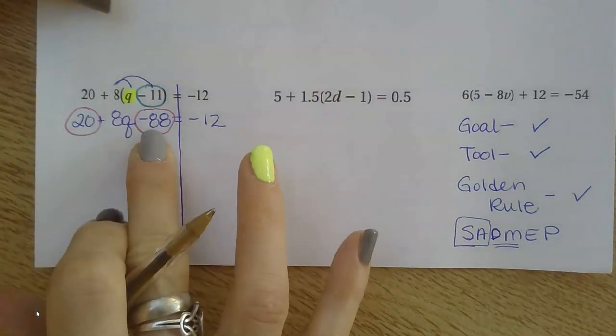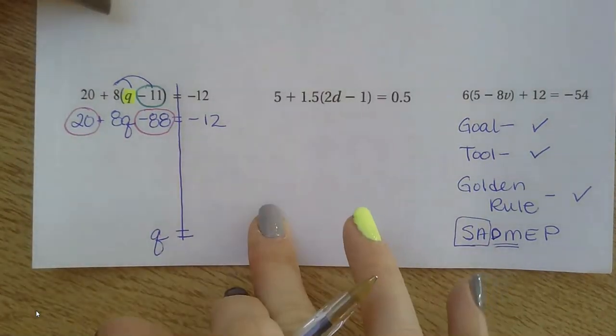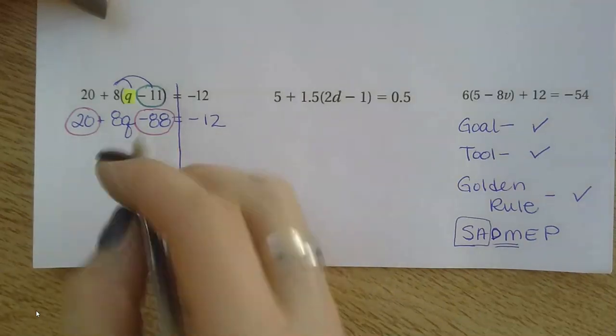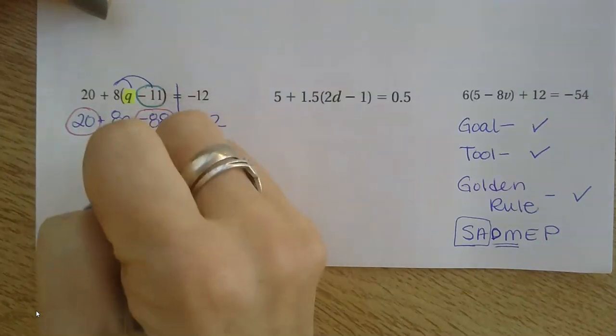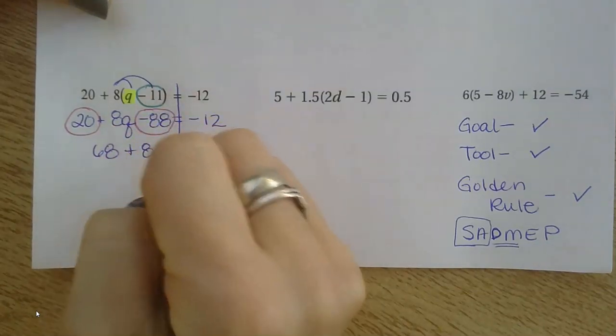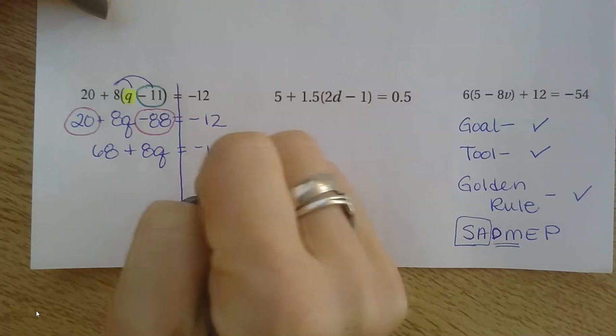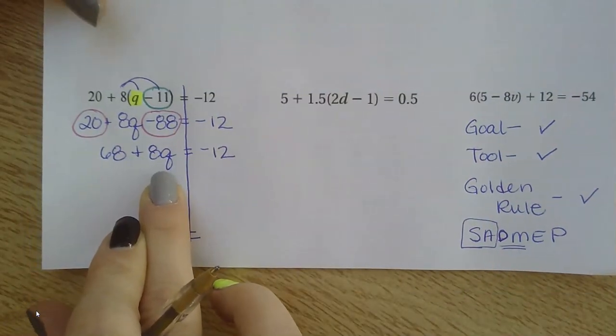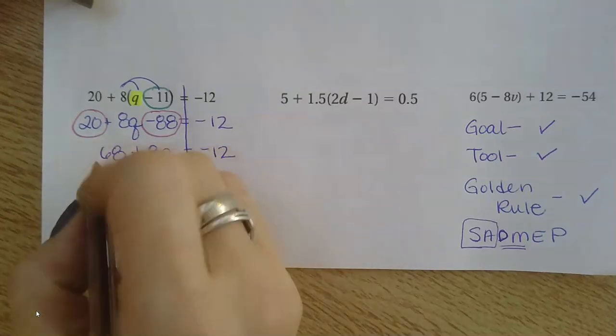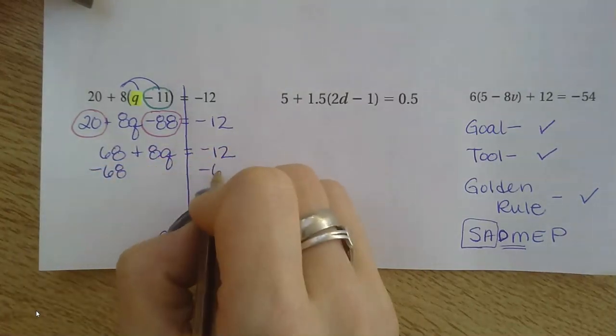Remember, different signs, I'm going to subtract those. You can go off and do it, or just 88 minus 20 is 68. And then I still have the 8Q. Bring everything down, and now this looks like a normal two-step equation that we've been doing. So now get rid of adding and subtracting first. Minus 68 from both sides.